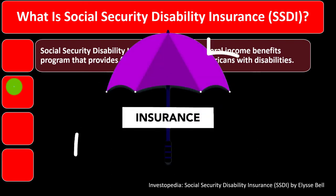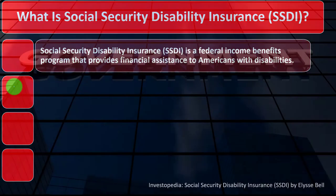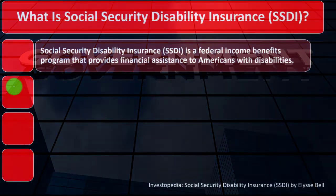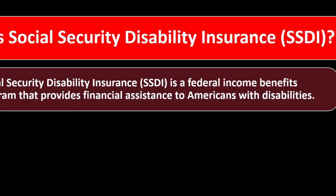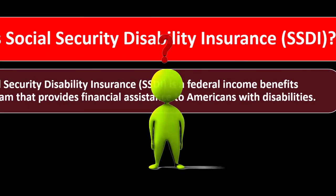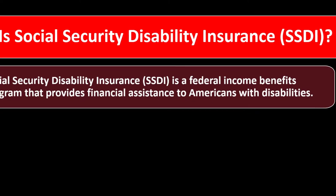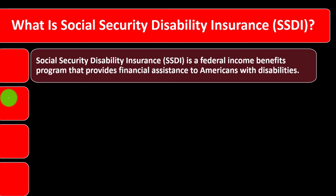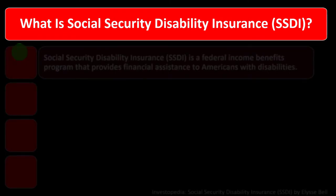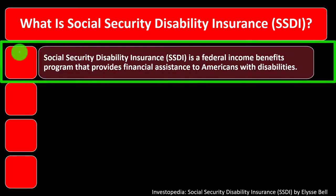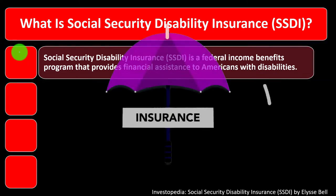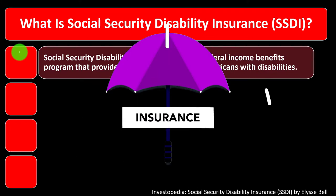We're looking at long-term disability, short-term disability, and the kinds of insurance that might be provided through an employer or by the government, versus those you might provide for yourself. We're piecing them together with our risk mitigation strategy. Social Security Disability Insurance — SSDI — is a federal income benefits program that provides financial assistance to Americans with disabilities.